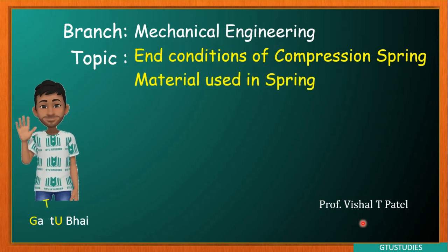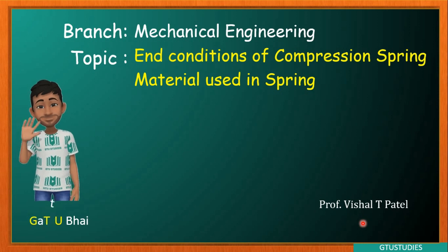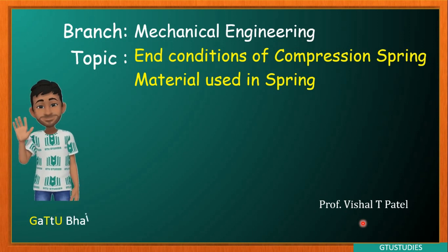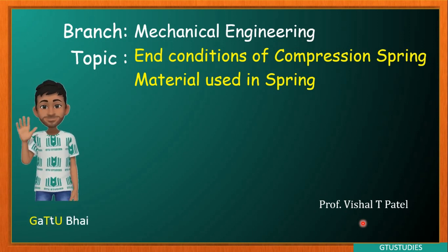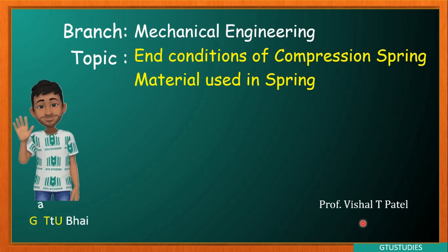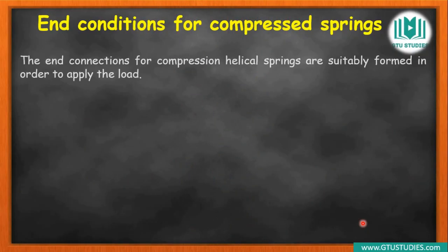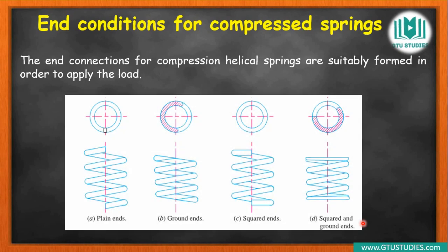In the last video, we studied basic terminology and useful terms. We saw that in this spring there are a large number of coils, and at the upper end and lower end, there are coils — from those we need to know what kind of stress will be generated. That is why end conditions of compression springs are very important. Let us see what types of end conditions can arise.